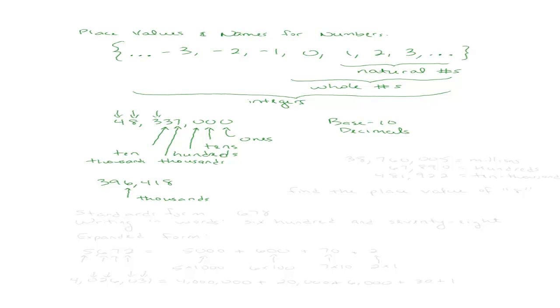Say I gave you the following numbers. I gave you the number 38,760,005. I also gave you the number 67,890. And I gave you the number 481,922. And I wanted you to find the place value of the digit eight in each one of those numbers.